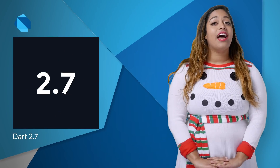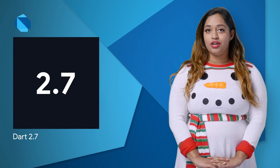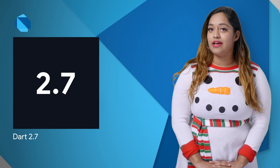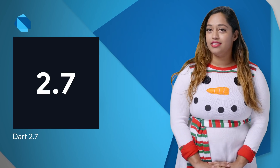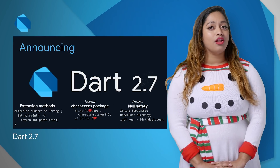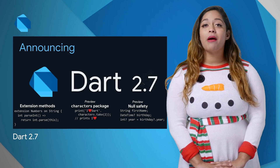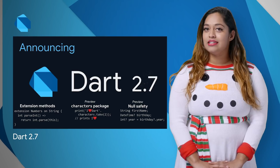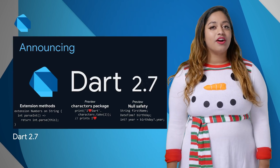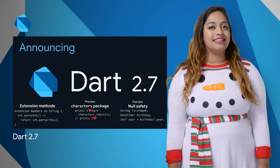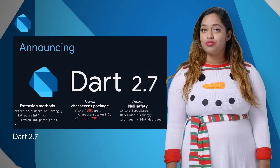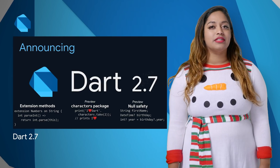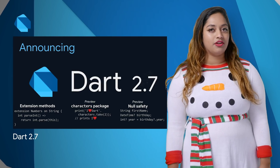Of course, everything we do in Flutter is based on Dart, which also announced the stable release of Dart 2.7 SDK. Dart 2.7 adds a long-requested, powerful new language feature: extension methods. These enable you to add new functionality to any type, even types you don't control, and have the brevity and autocomplete experience of regular method calls.